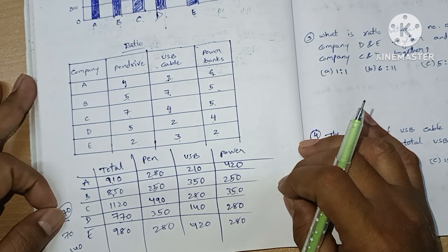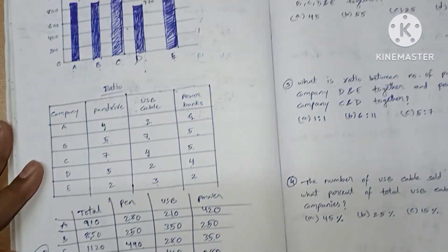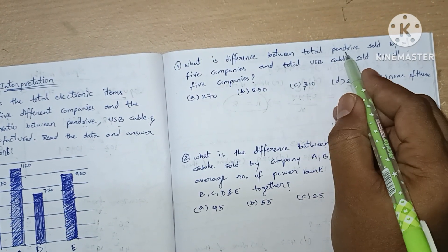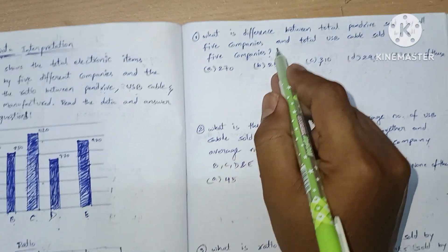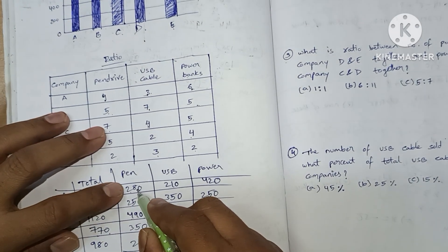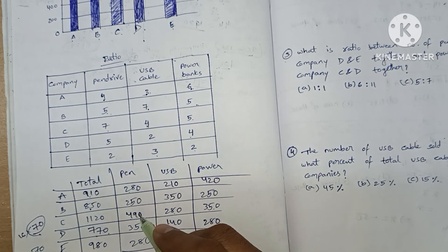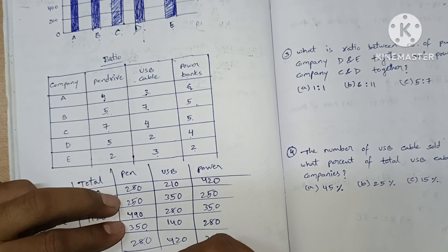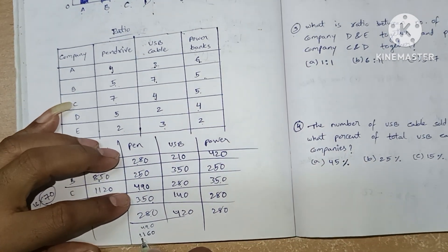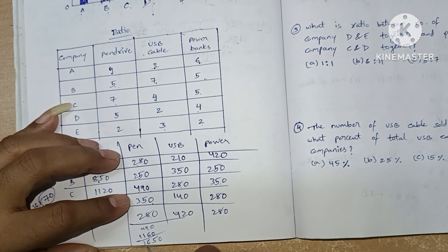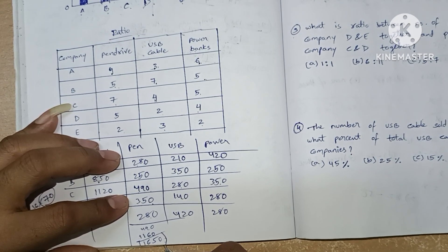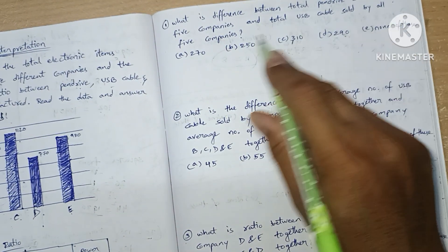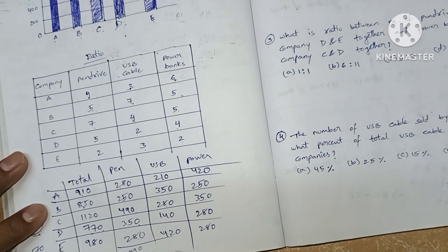Now we are going to see the questions. Question number one: what is the difference between the total pen drives sold by all five companies? The pen drive values are 280, 280, 490, 350, and 280. Adding these: 280+280 = 560, 560+490 = 1050, wait — 560+600 = 1160, plus 490, total pen drives = 1650.